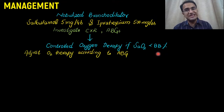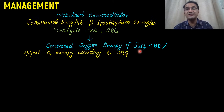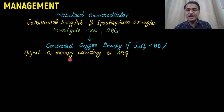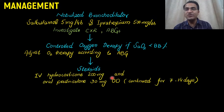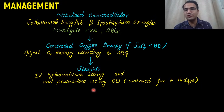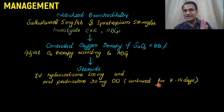Give controlled oxygen therapy if the oxygen saturation is less than 88%. I'll discuss controlled oxygen therapy and its mechanism in COPD in a while. You adjust the oxygen therapy according to the ABG report. Then you have to put the patient on steroids — give IV hydrocortisone 200 mg. When sending the patient home, put the patient on oral prednisolone 30 mg once daily for 7 to 14 days at least, then taper down the dose and stop it ultimately.